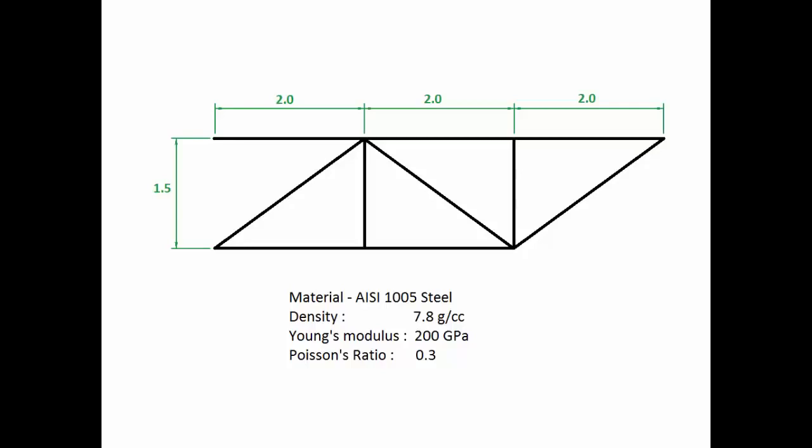The truss is made of steel with a density of 7.8 grams per centimeter cube, a Young's modulus of 200 gigapascals, and a Poisson's ratio of 0.3.